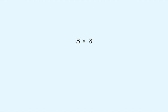Let's look at another example: 5 times 3. Since multiplication is just repeated addition, we can rewrite 5 times 3. Remember, the first number tells us what number to add, and the second number tells us how many times to add it. So we are going to add 5 three times: 5 plus 5 plus 5.